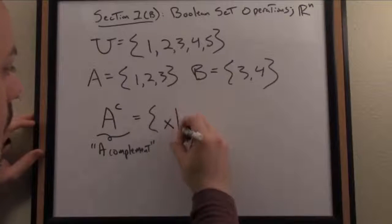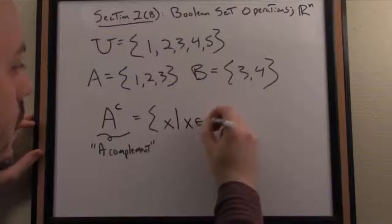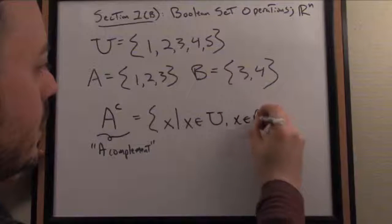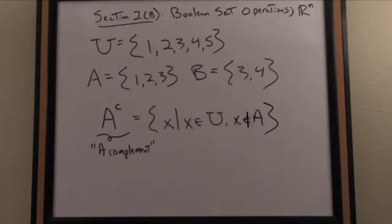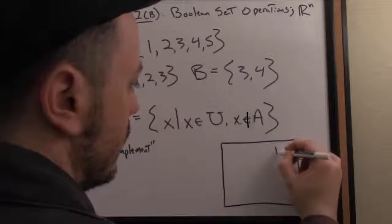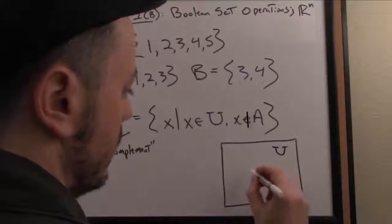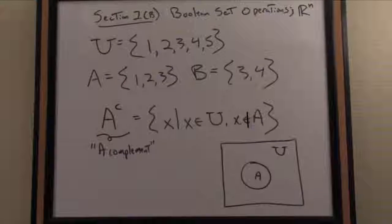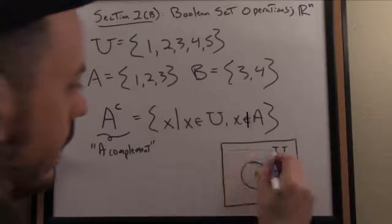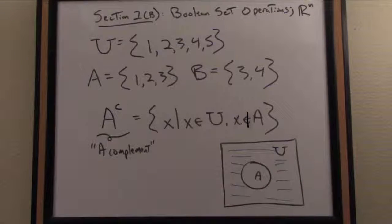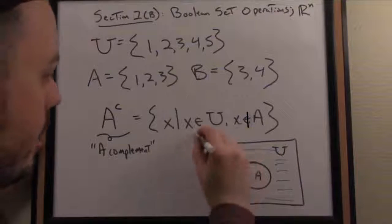I'll write that using set builder notation. A complement, by definition, is the set of all x such that x is contained in our universe but x is not in the set A. We can illuminate that definition with a simple Venn diagram. Here's our universe with the set A. A complement is everything outside of A but still in our universe.